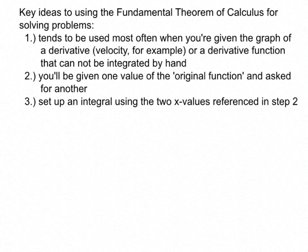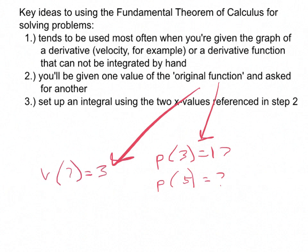The second key idea is that you'll always be given one value of the original function and ask for another. So what this step here means is they'll tell you something like, the position at time 3 is 17. What is the position at time 5? Or they'll say the velocity at time 7 is 3. What is the initial velocity? This is always going to hinge on one of those two ideas.